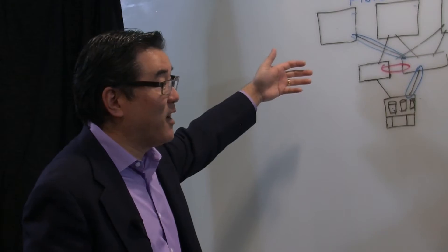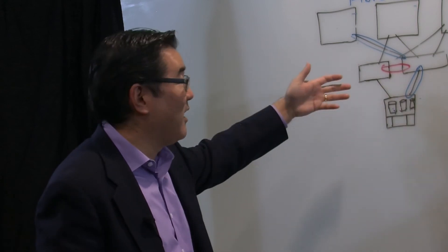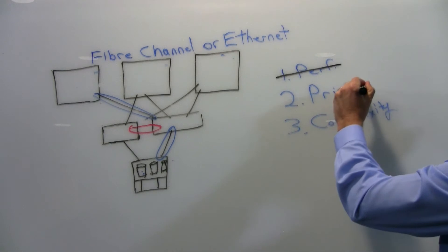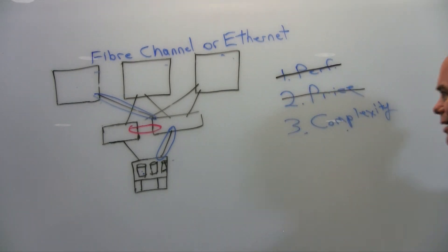We believe when customers add all that together, 8 gig fiber channel is going to be less expensive, and then 16 gig fiber channel is going to be at or near parity. I think we can knock out price then, right? You feel good about that? Absolutely.